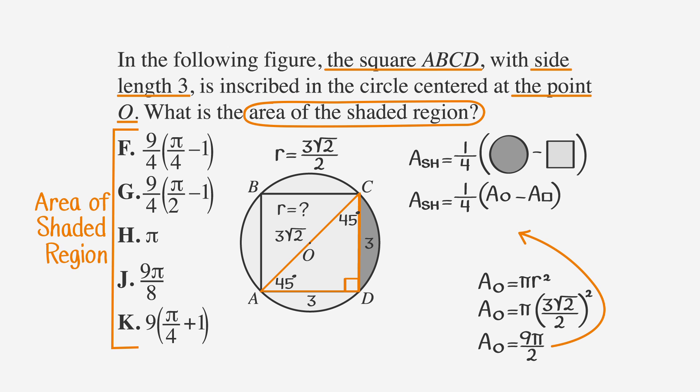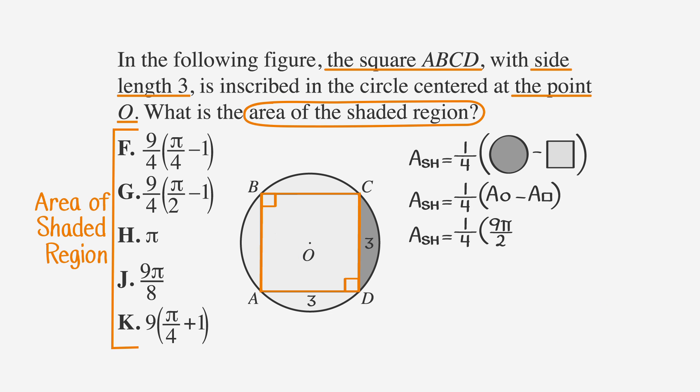Going back to the equation for finding the shaded area, let's plug 9 pi over 2 in for the area of the circle. Now we're just missing the area of the square. The formula for the area of a square is side, or s squared. s is 3, s squared is 3 squared, and the area is 9.